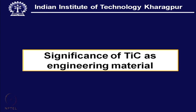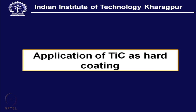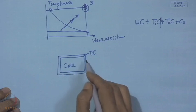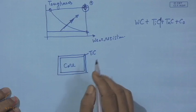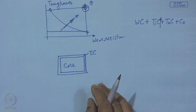Here we find the significance of titanium carbide as the engineering material. Application of TiC as a hard coating — the demand mostly comes from the cutting tool industry. There are other areas: metal forming tools, bearings — particularly the balls of ball bearings — are also coated with TiC to improve their wear resistance. This coating enhances the performance of the whole composite consisting of a tough core and a wear-resisting surface.